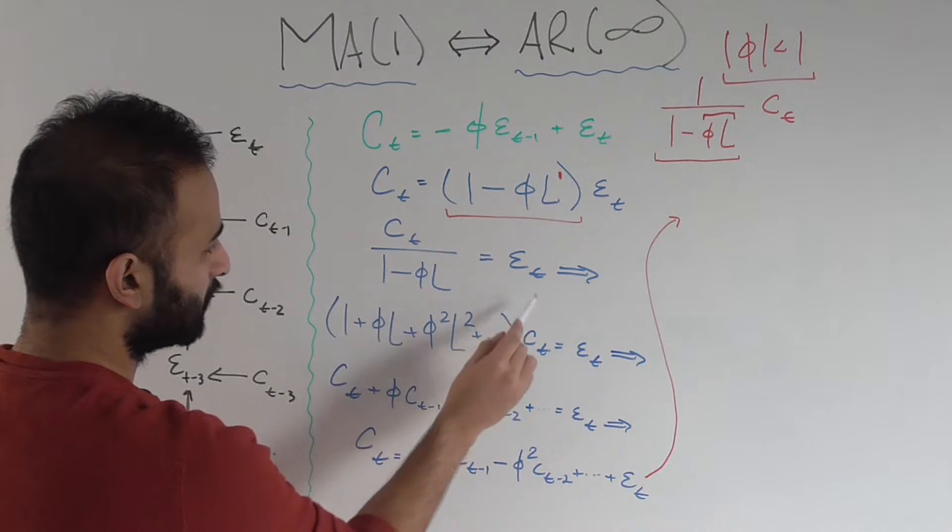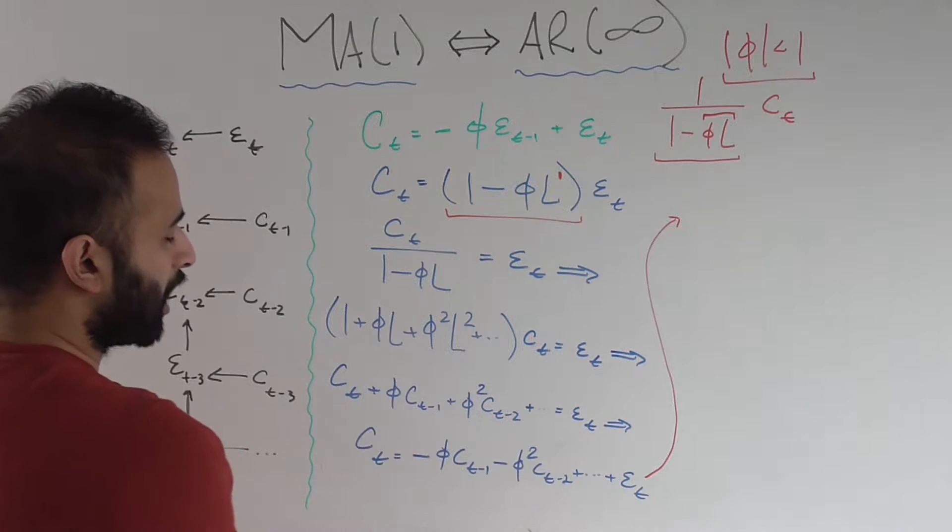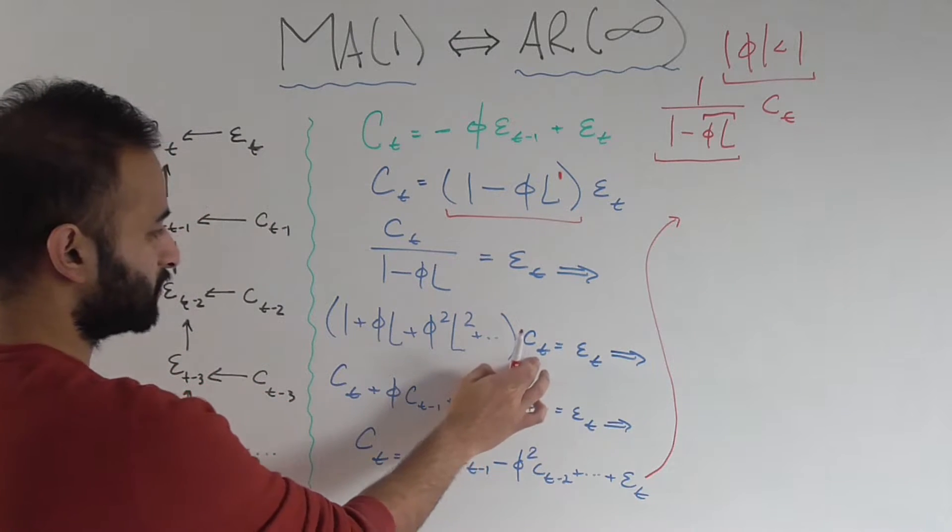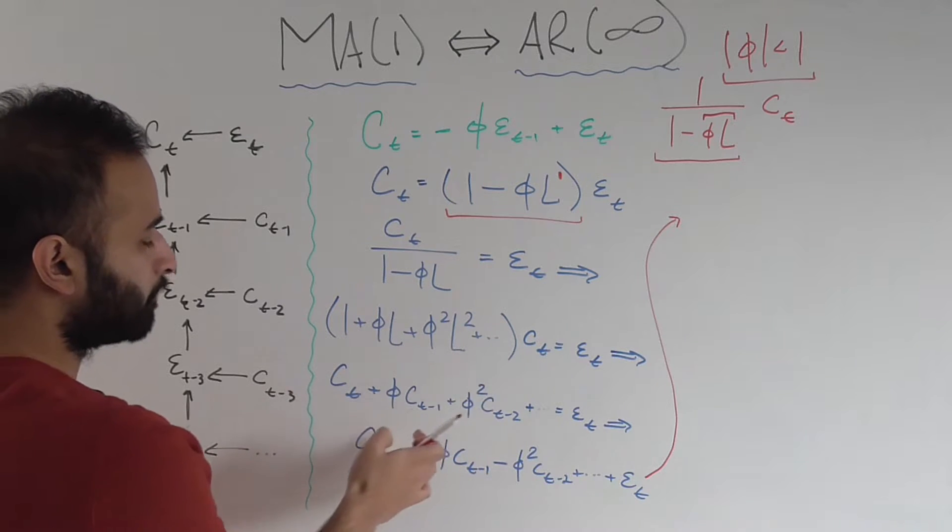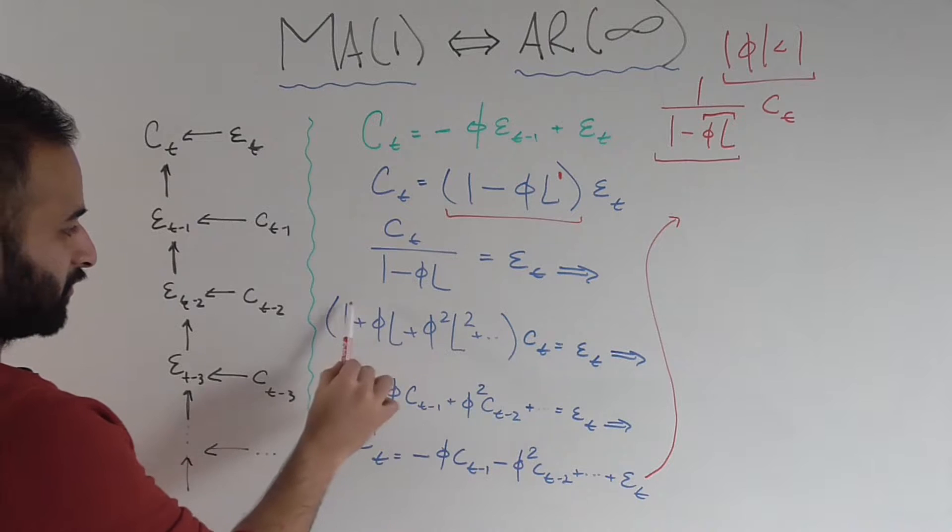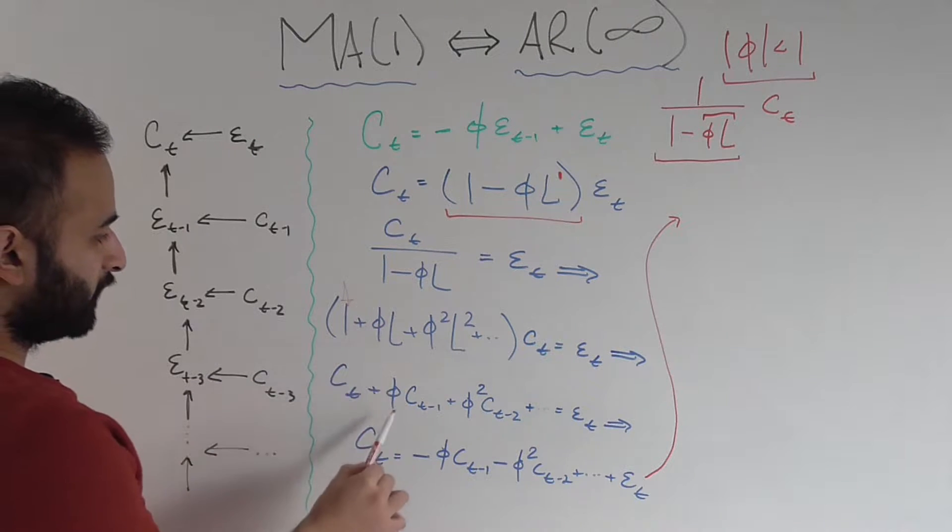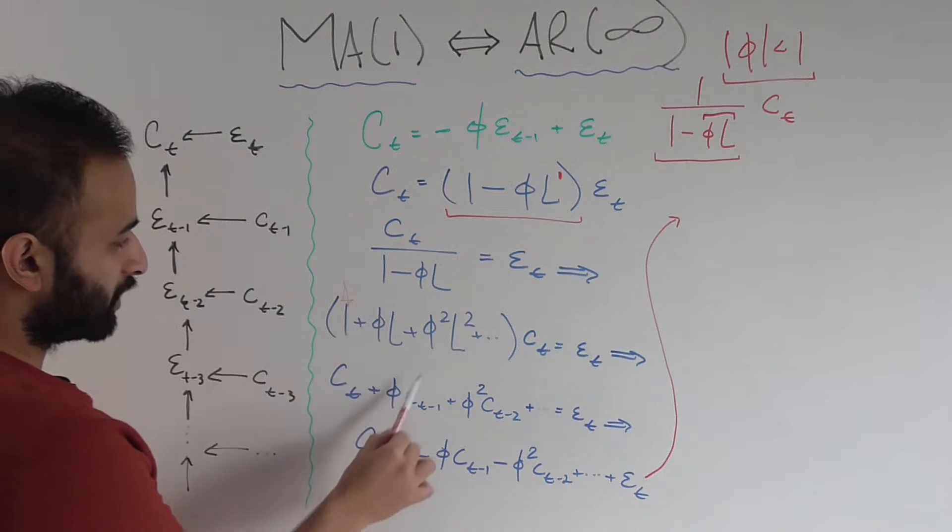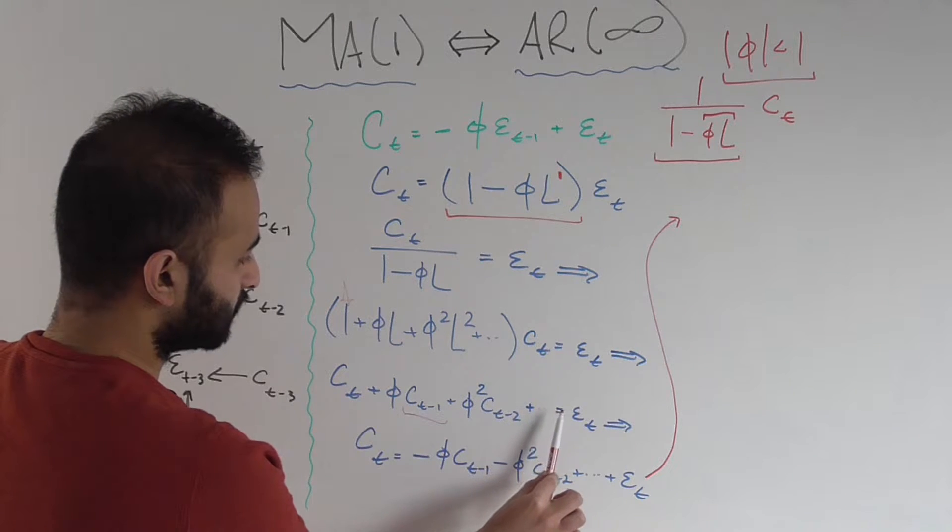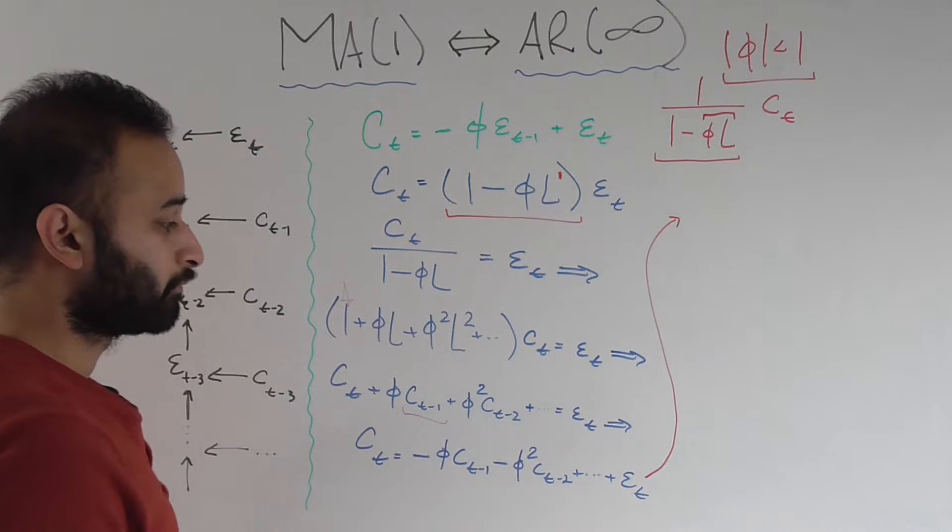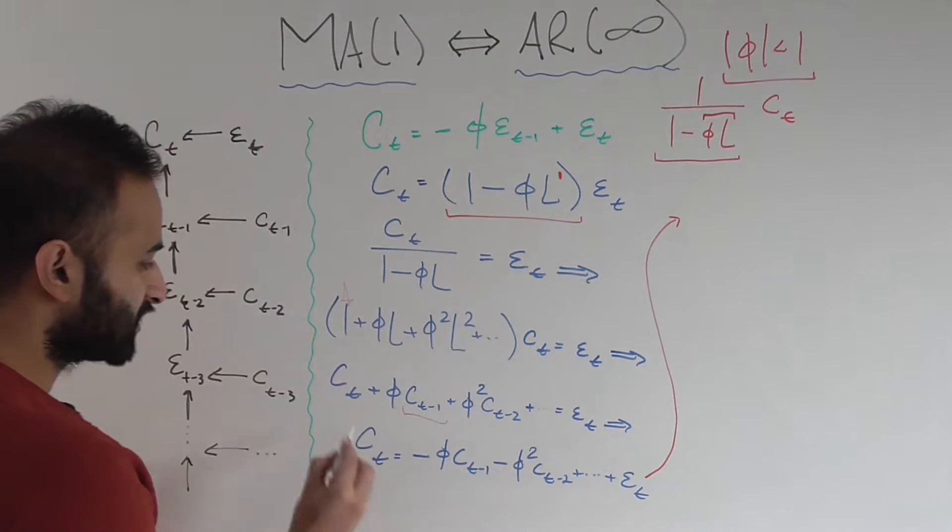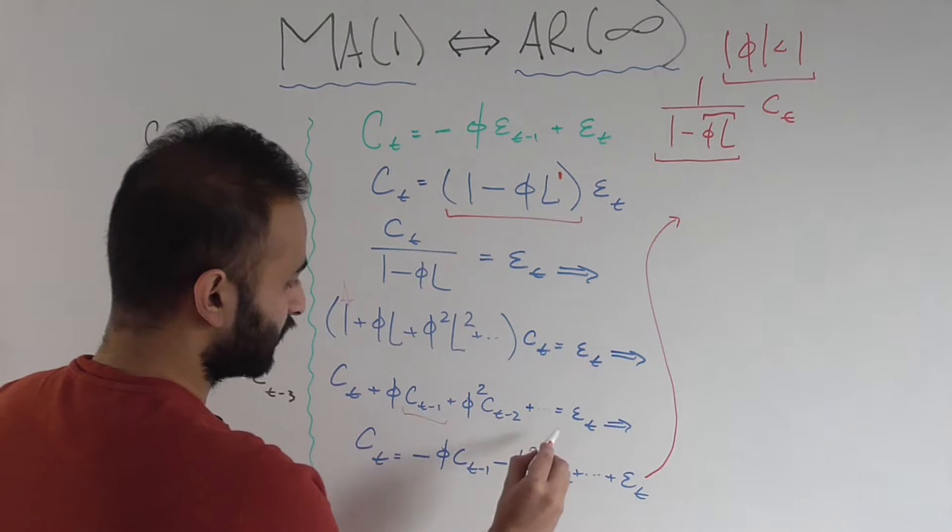So that's why I'm allowed to write this as 1 plus phi sub L plus phi squared L squared, and this infinite sum right here. That's where that comes from. I still have this C sub T and I have epsilon sub T. Now I'm going to take this lag operator and break it up, so I'm going to just take this C sub T and apply it against the lag operator every single time. So I'm going to get C sub T, so that's from here. I'm going to get phi and then I have L applied to C sub T, so that becomes C sub T minus 1. And I get all of this infinite series of C sub T minus K. So now we're starting to see where this AR infinite bit comes in, because this is just an AR infinite series.